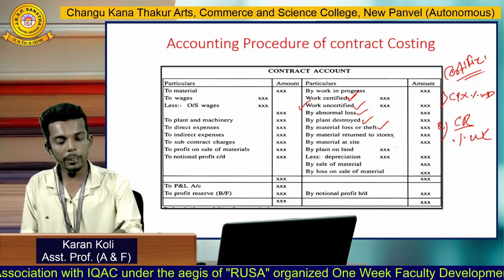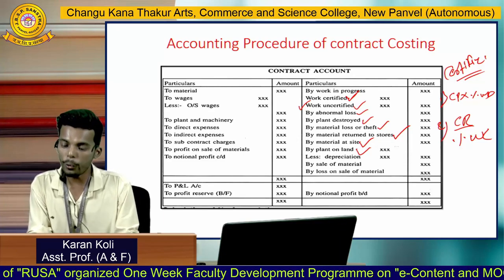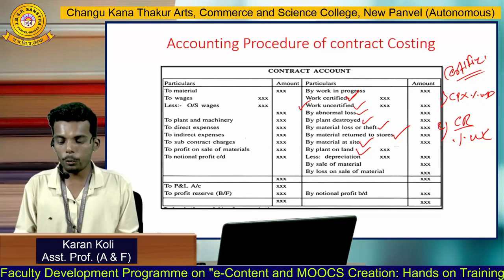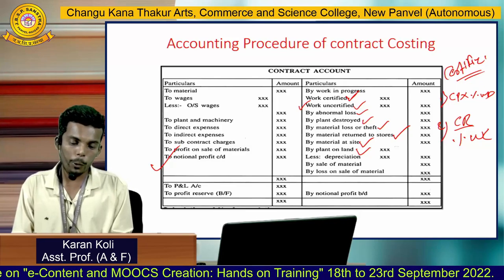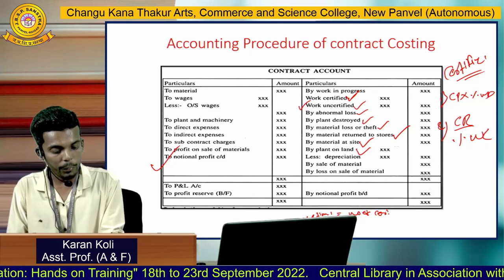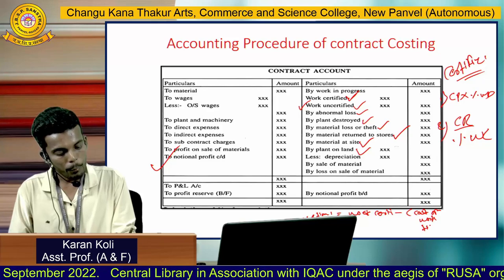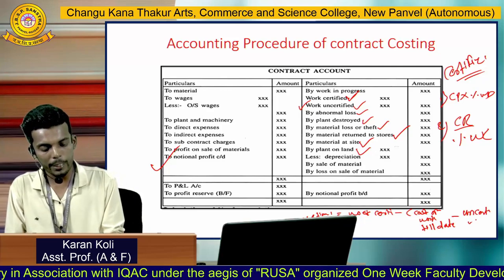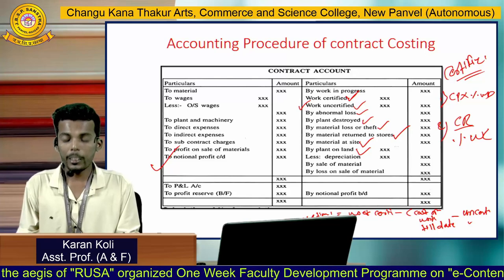The final result of the contract account is notional profit, which is very important. There are two formulas: first, Notional Profit = Work Certified − Cost of Work Till Date − Uncertified Work; and the second formula, depending on the situation, is Notional Profit = Work Certified − Cost of Work Till Date.